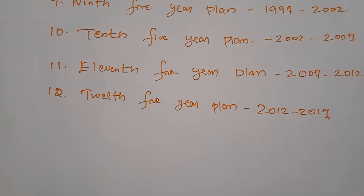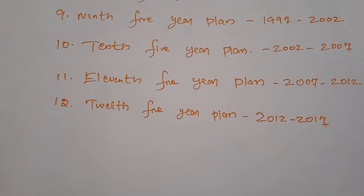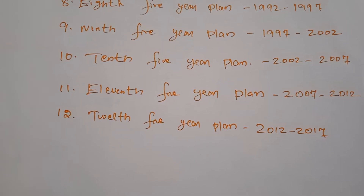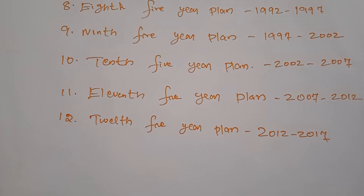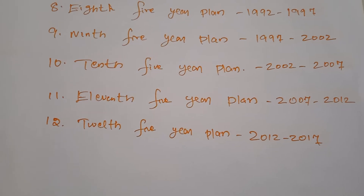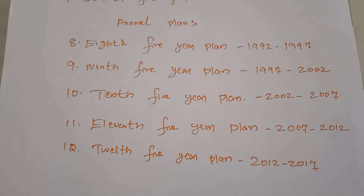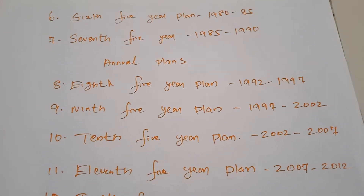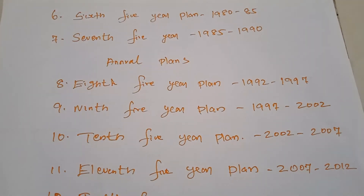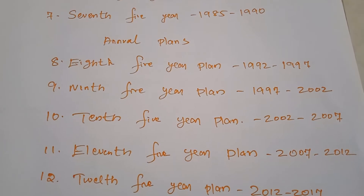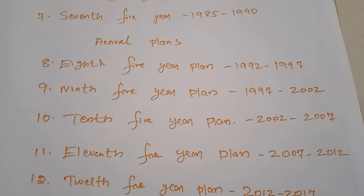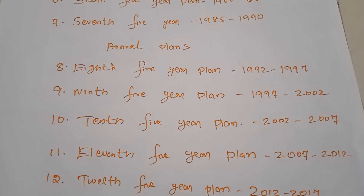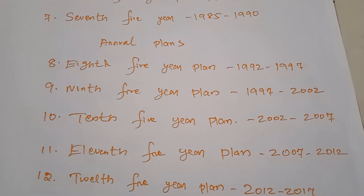After the three five-year plans there was a plan holiday, meaning no formal plan was in place for a period. The main reasons behind the plan holiday were the Indo-Pakistan war and the failure of the third plan. Because of these two reasons, the plan was put on holiday.